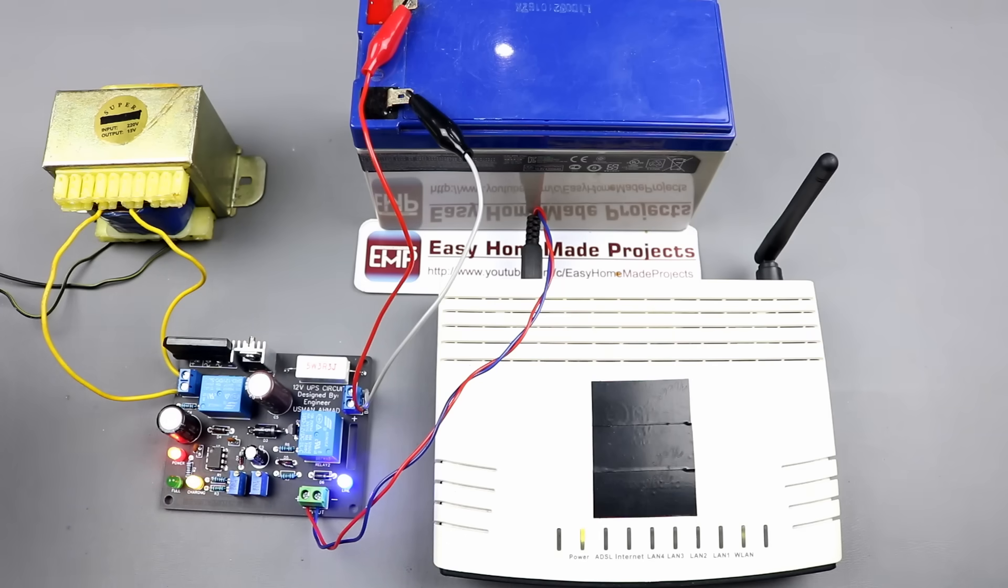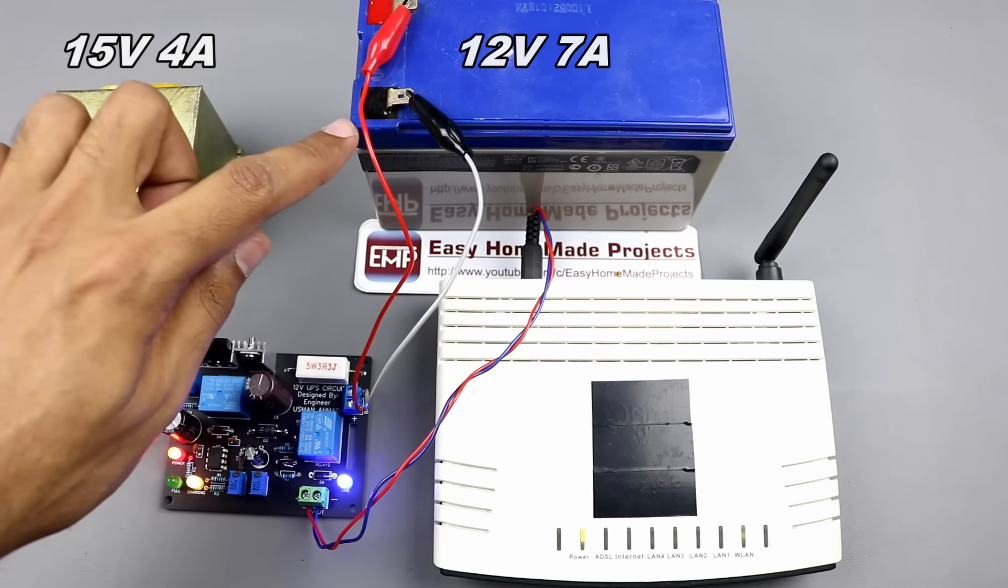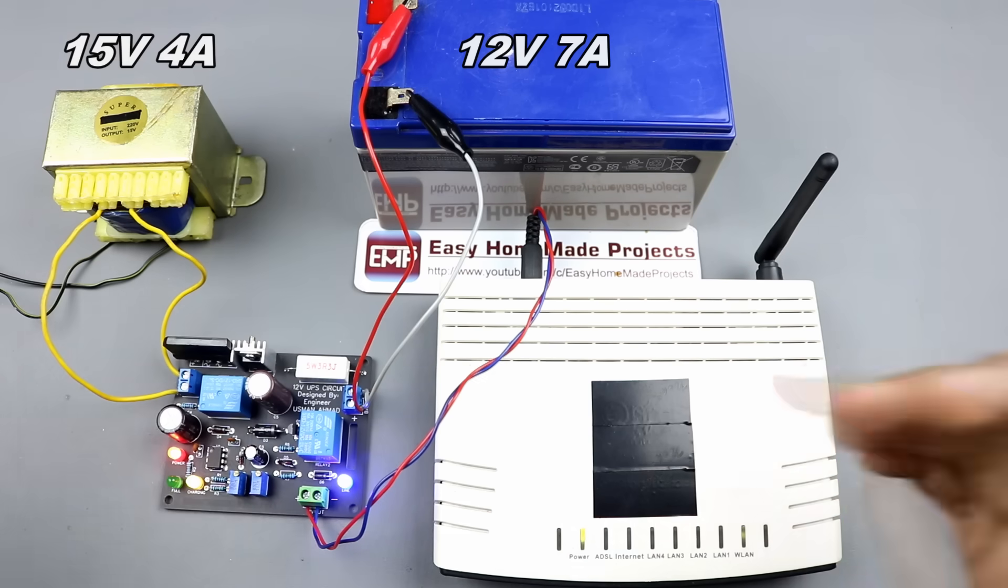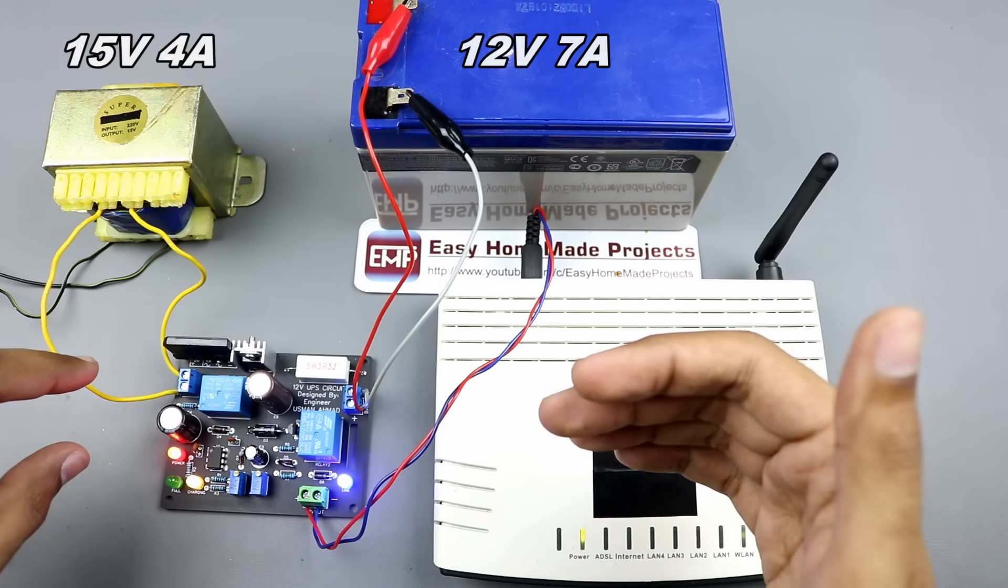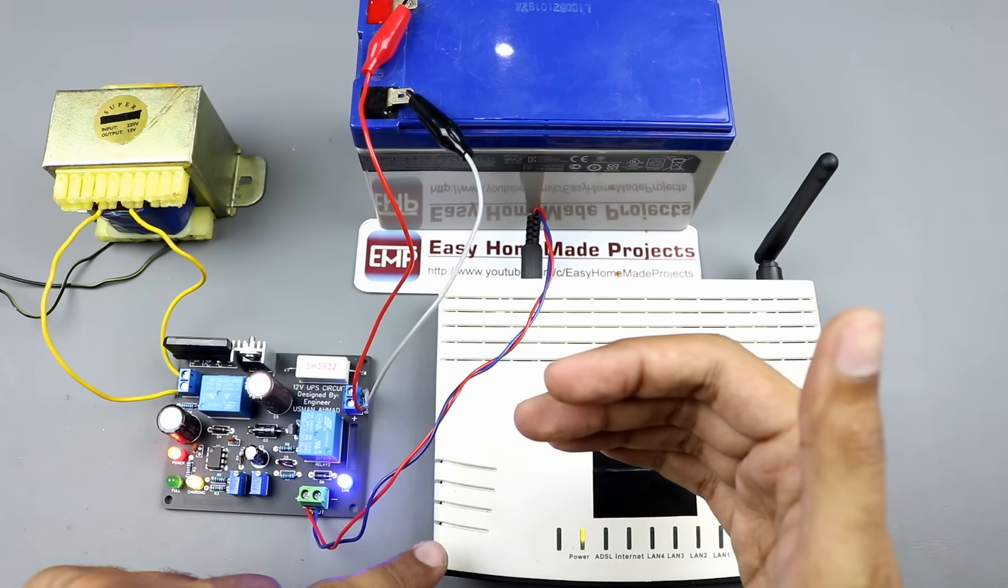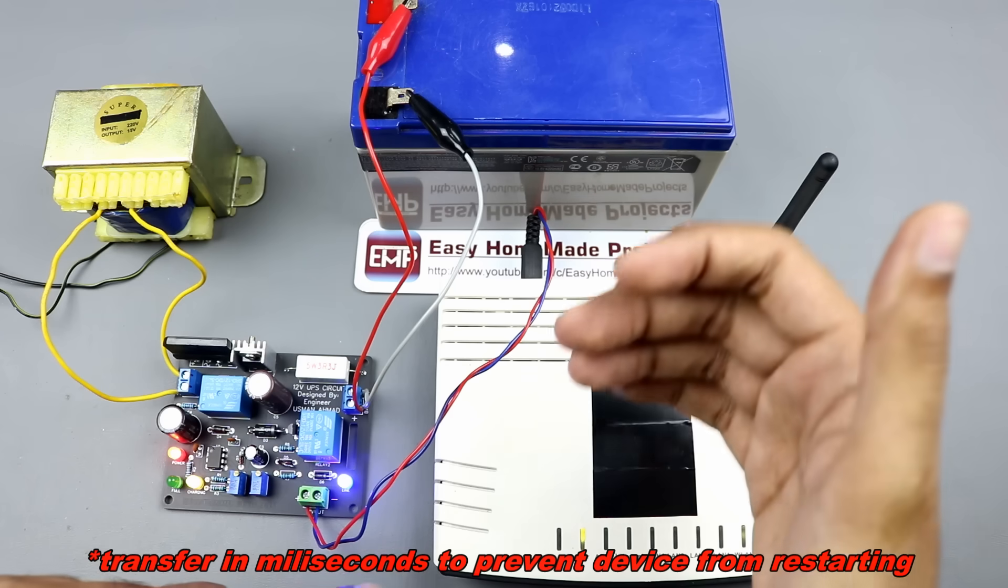So guys, here is the final setup for our UPS circuit. This transformer is now charging the battery and powering this device. Now, I am going to disconnect the main power supply. You will notice that the device will be automatically transferred to the battery without any delay.